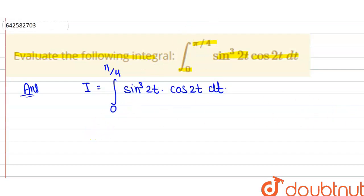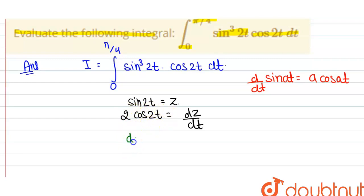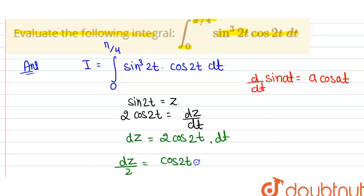Now, take sin(2t) = z. Differentiating both sides with respect to t, we get 2cos(2t) = dz/dt, which gives us dz/2 = cos(2t) dt.